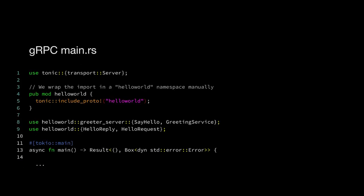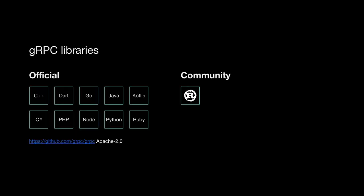In Rust, the protoc compiler generates files we can import in a simple and easy way into our project. We do not need to bother setting up an HTTP REST server or handling cases manually — everything is auto-generated. This is very similar to what you see in OpenAPI, but there are key differences. In OpenAPI, you probably won't find as many official libraries as you will find with gRPC.